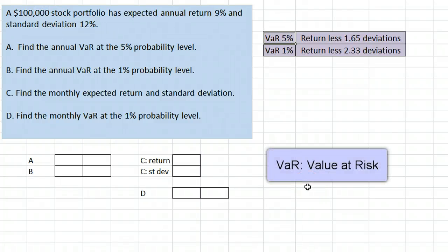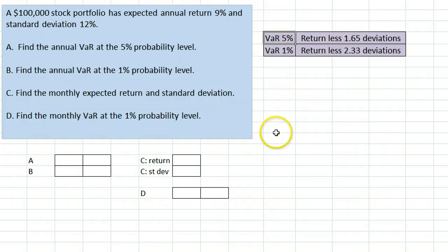This video demonstrates the calculation of VAR, value at risk. Here we have a $100,000 stock portfolio with expected annual return 9% and standard deviation 12%. Our first question is to calculate an annual value at risk at the 5% probability level.